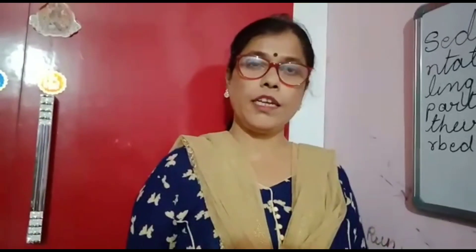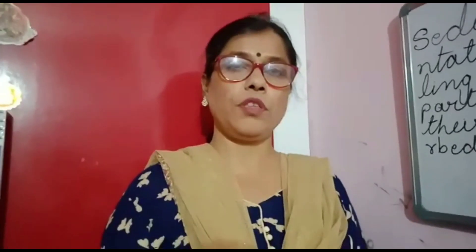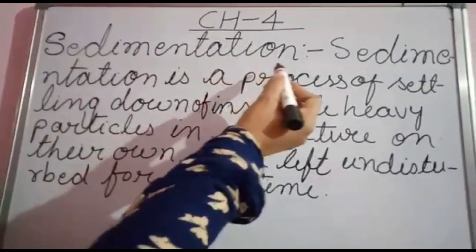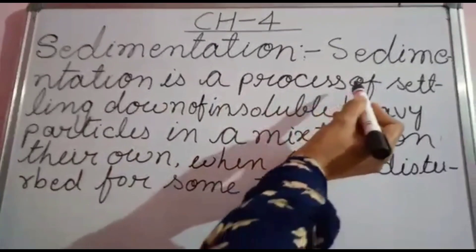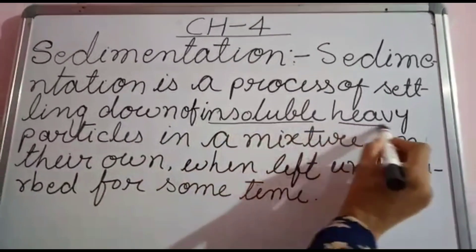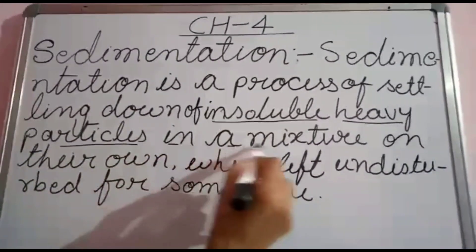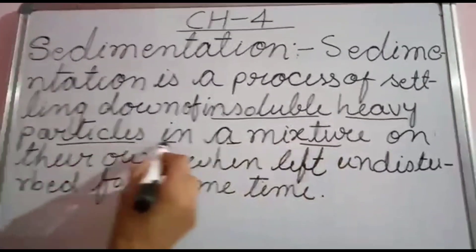I will show you the loading process using the chemical alum next time. As I have already shown you an activity of sedimentation and decantation, I think you have understood these processes of separation. So let us now define what is sedimentation and what is decantation. Look at the board — I have written: sedimentation. What is the definition of sedimentation? Sedimentation is a process of settling down of insoluble heavy particles in a mixture on their own.